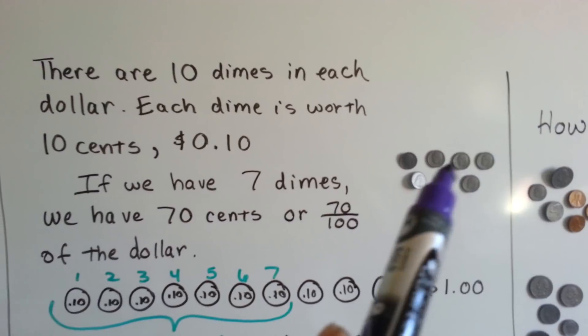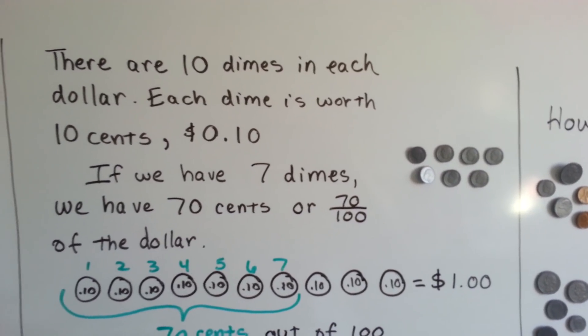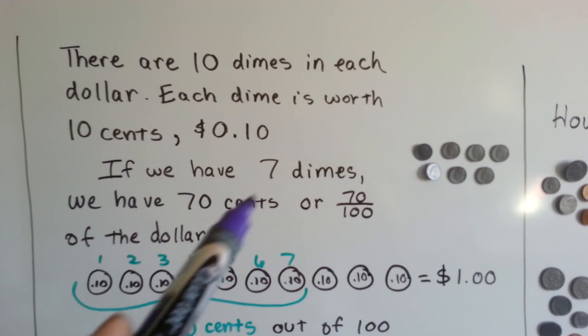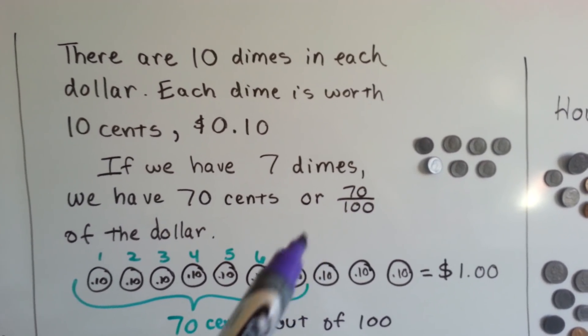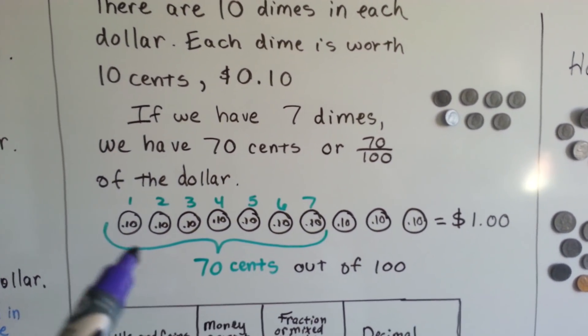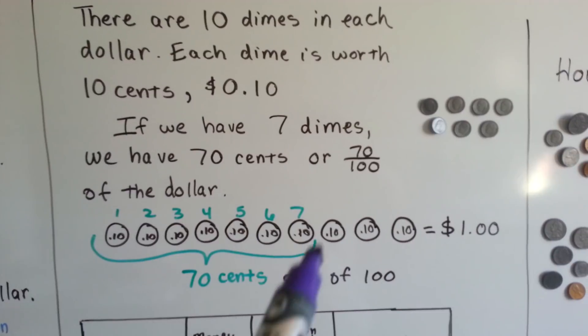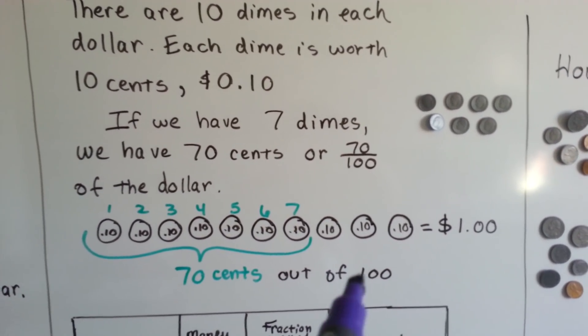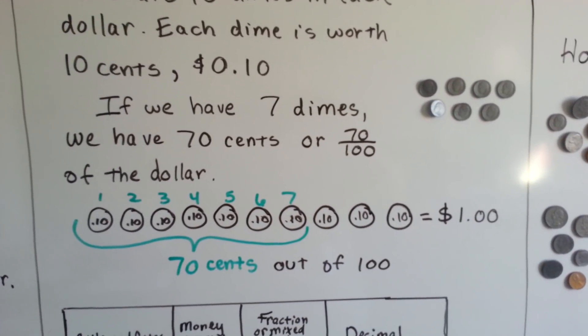They're each worth 10. 10, 20, 30, 40, 50, 60, 70. Or we could say, because there's 100 cents in a dollar, that the 70 cents was 70 one-hundredths. 70 one-hundredths of a dollar. 70 dimes is equal to 70 cents, or 70 cents out of 100.